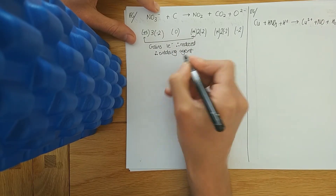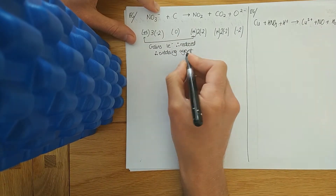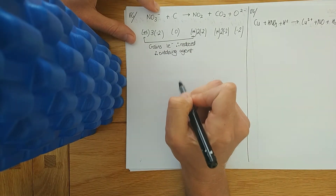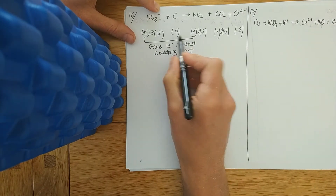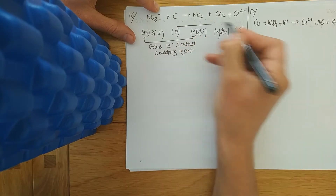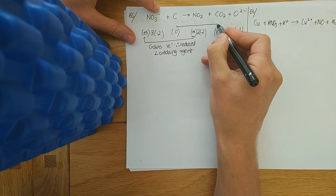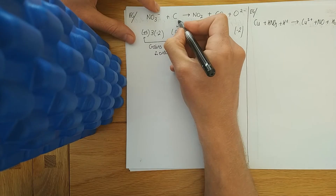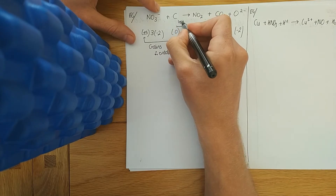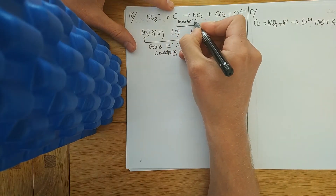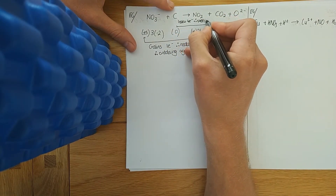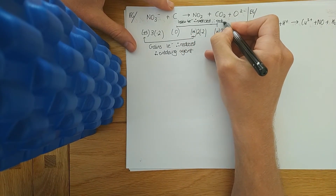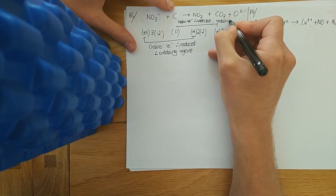Nitrogen gains one electron, therefore it's reduced, therefore it's the oxidising agent — something that allows oxidation to happen by gaining electrons itself. Carbon has gone from zero to plus four, so it loses four electrons, therefore oxidised by OIL RIG, therefore reducing agent.